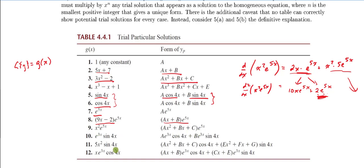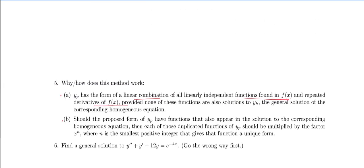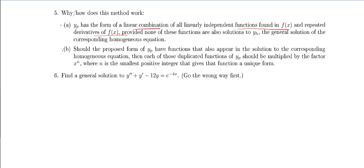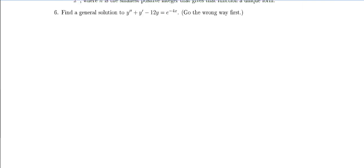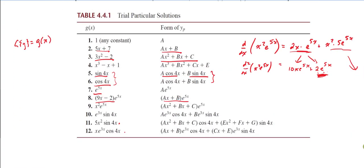Hopefully that explains how this table works. It gets more complicated as you go along, but the most important thing to keep in mind is understanding statements 5A and 5B — if you understand those, you can build the table yourself, and even if you have the table, you won't be successful if you don't understand those rules. Thank you folks, and we'll see you in class.